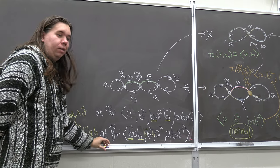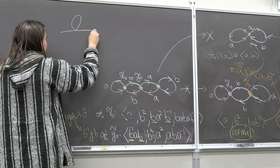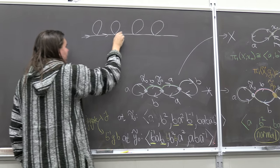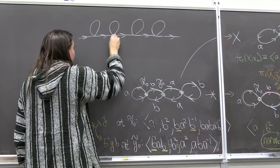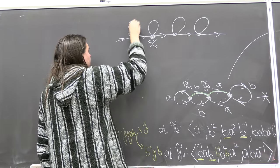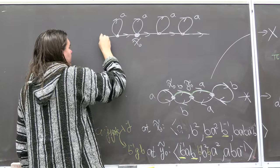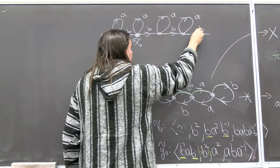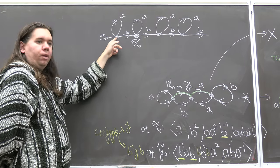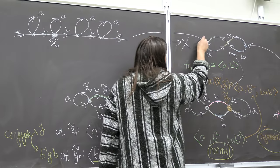Let me show you a more exotic infinite cover. Consider a graph where at every vertex you have an a-loop and b-edges connecting it to the next vertex — extending infinitely in both directions. Each point has an a coming out, an a coming in, a b coming out, and a b going in. This is a covering space of the wedge.